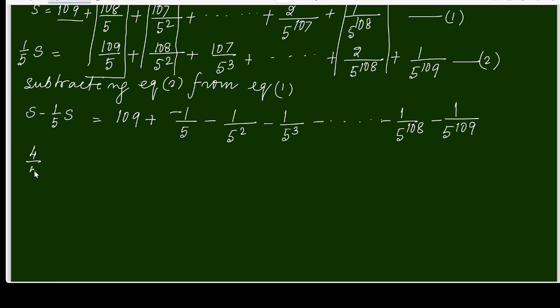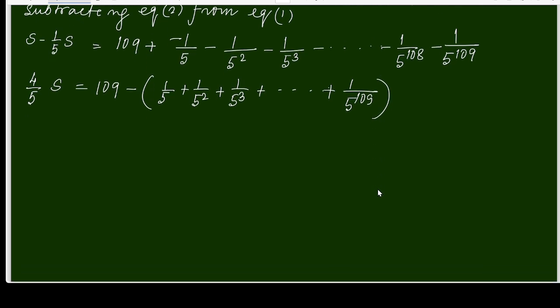So we have made a geometric series. S minus 1 by 5 S is 4 by 5 S, which equals 109. I'll take minus common: minus (1 by 5 plus 1 by 5 square plus 1 by 5 cube plus up to 1 by 5 power 109).